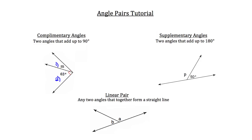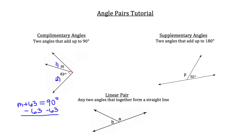These two angles are going to add up to 90 degrees because they compose the total right angle. So you could actually solve for angle m — you know that m plus 63 degrees adds up to 90 degrees. So you could just subtract 63 from each side and get m is equal to 27.